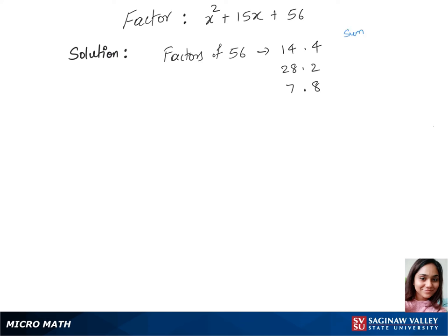The sum of each of these pairs: 14 plus 4 is 18, 28 plus 2 is 30, and 7 plus 8 is 15. The 15 is matching up with our middle term's constant.